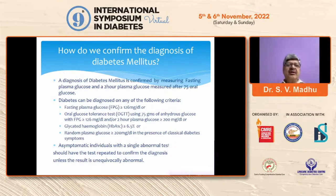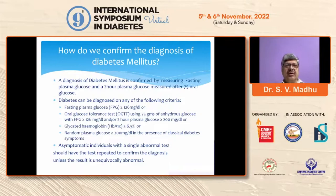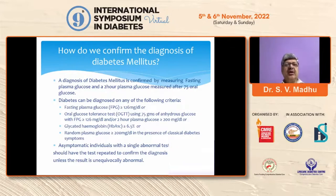Asymptomatic individuals with a single abnormal test should have the test repeated to confirm the diagnosis unless the result is unequivocally abnormal, because this is a lifelong diagnosis and one has to be absolutely sure. A word of caution regarding A1C as the sole diagnostic criteria: these methods are not standardized and there is huge variation between laboratories, so one should not rely on A1C as the sole criteria for diagnosis. Also, in a country like ours with a large population having iron deficiency anemia and hemoglobinopathies, we should be very cautious in interpreting borderline A1C values.